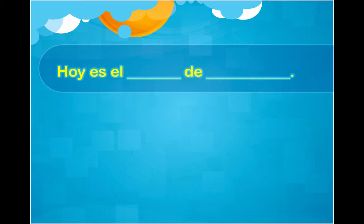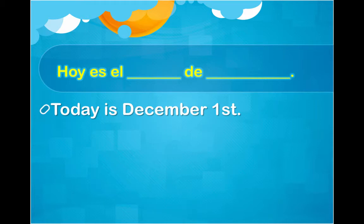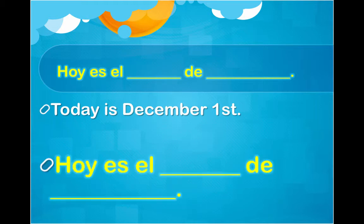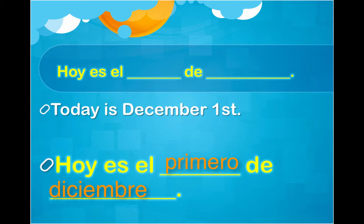For example, here's our formula again. Our practice date is going to be: today is December 1st. First has a special word — I've got to keep that in mind. The number of the day goes in the first blank. First is a special word, so: 'hoy es el primero de,' and then December is 'diciembre.' Hoy es el primero de diciembre. That's the quirk — primero is always used for the first with dates.